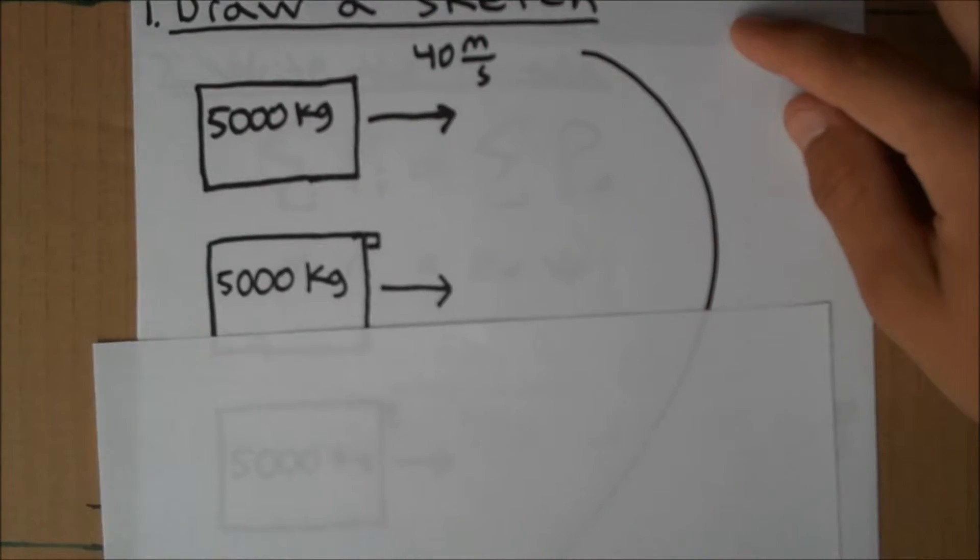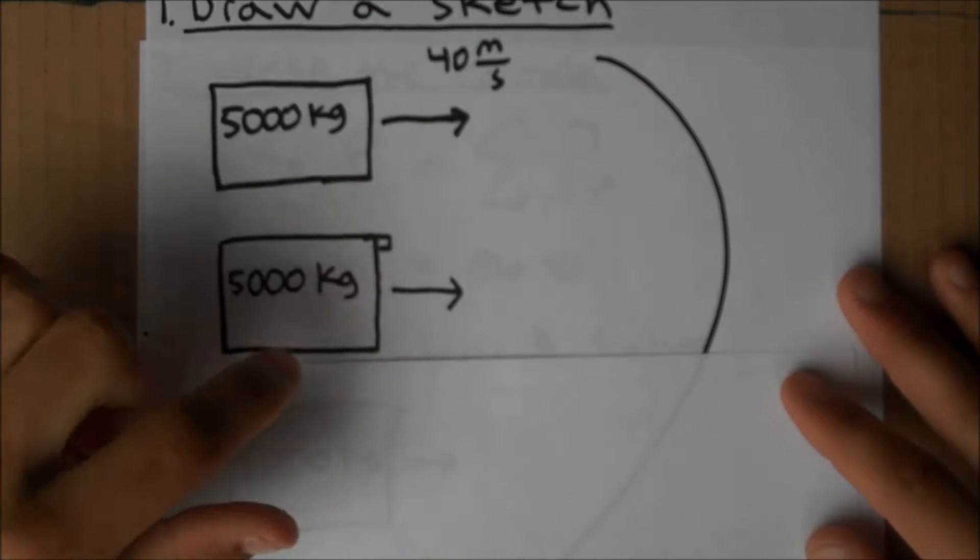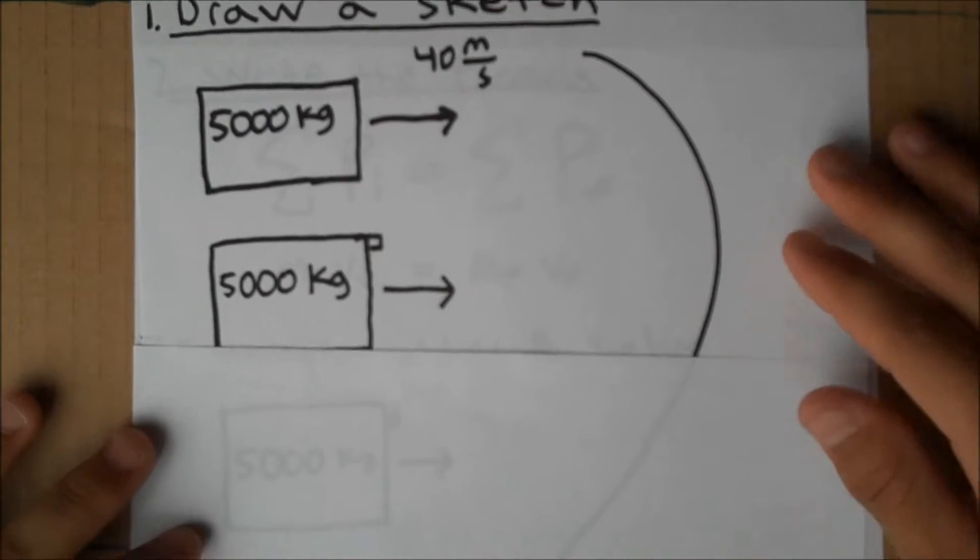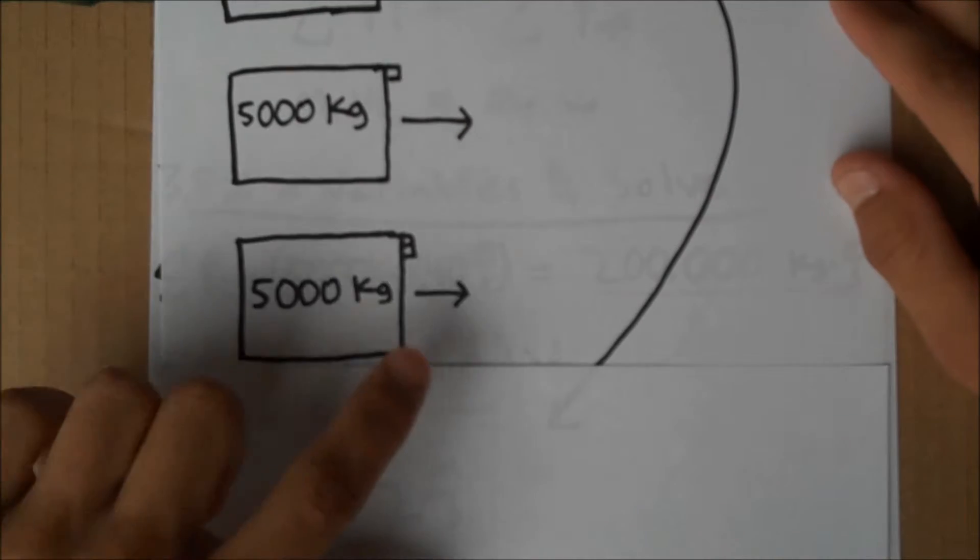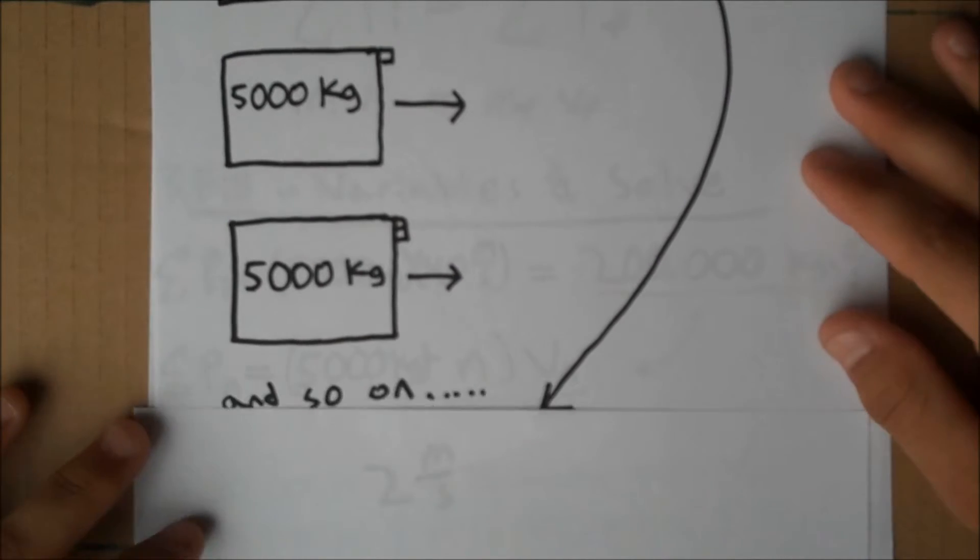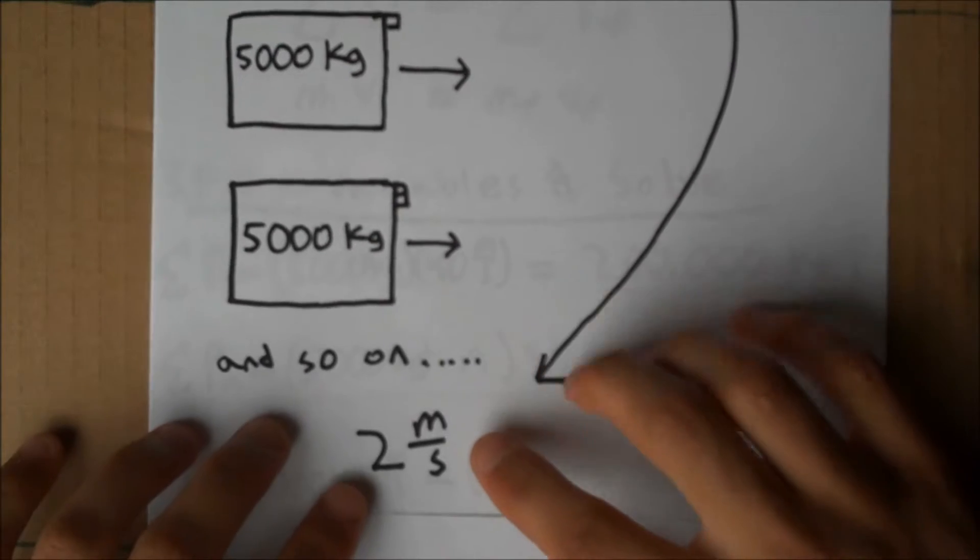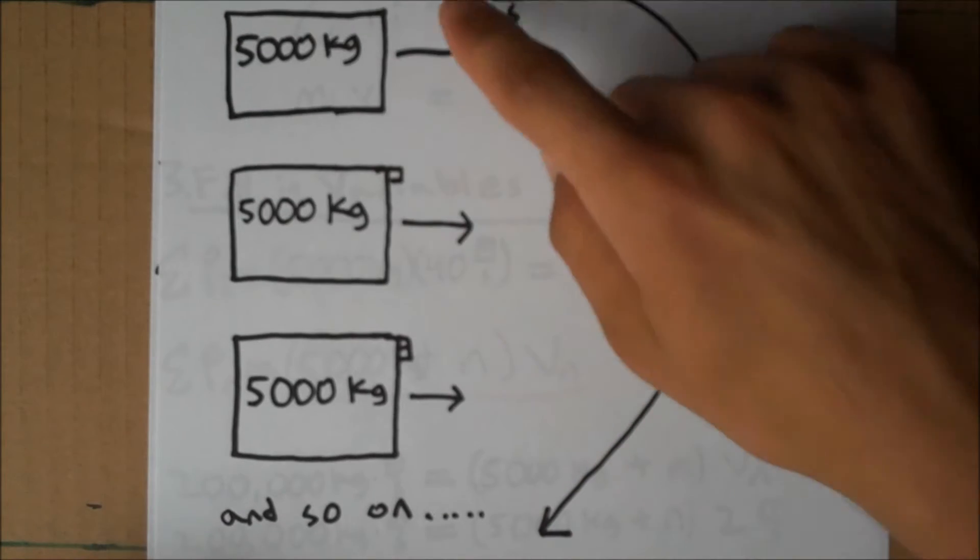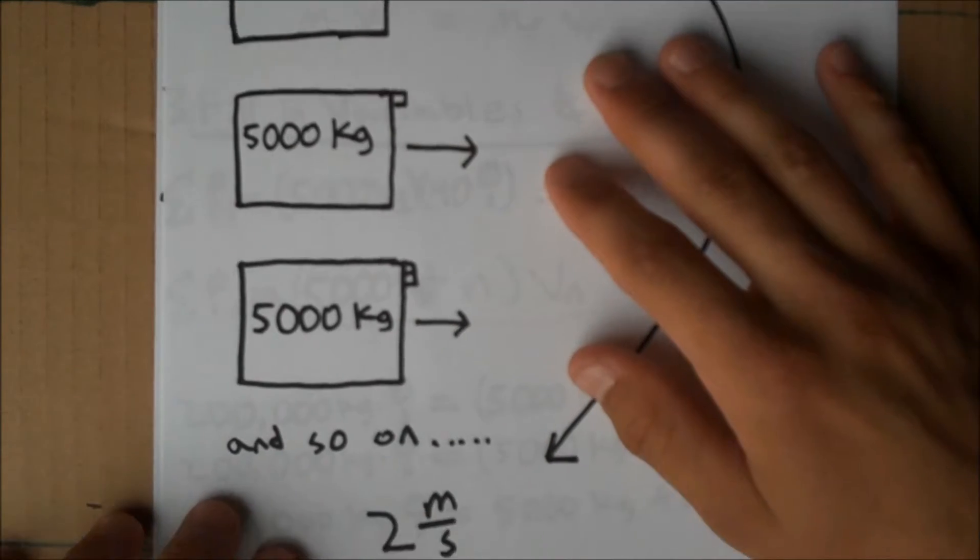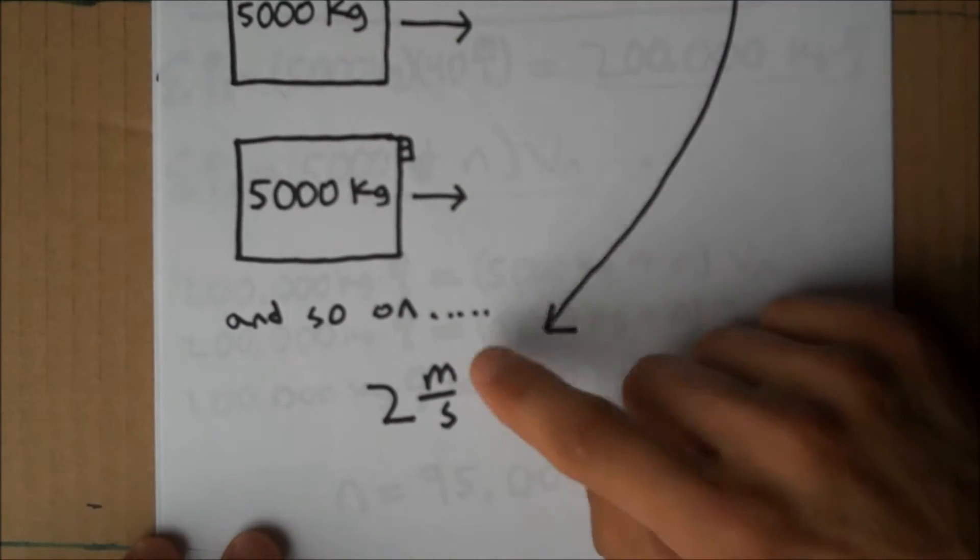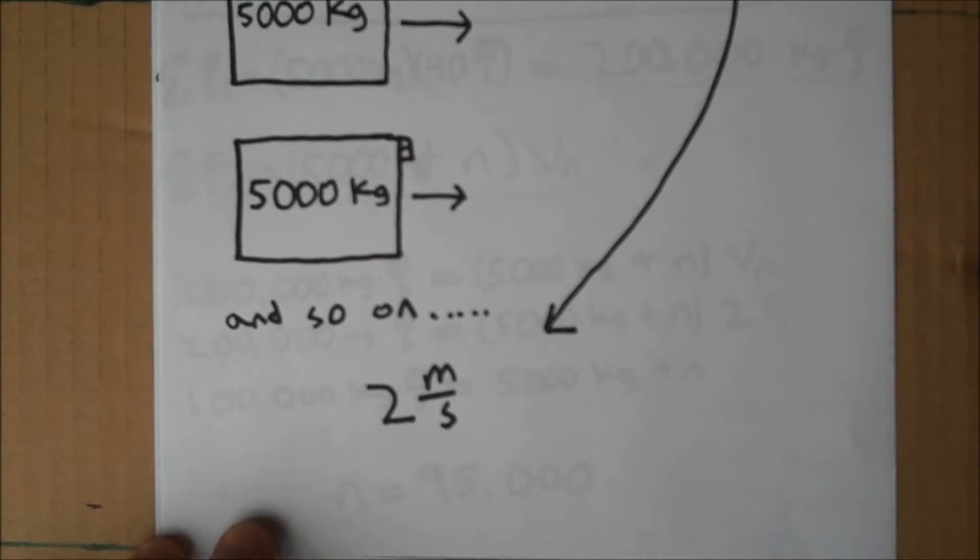Then we can imagine that he runs into the first garden gnome, now moving a little bit slower, runs into the second garden gnome, moving a little bit slower, and so on. Every time he'll be moving a little bit slower and we want to know how many of these collisions it takes to take us all the way down to 2 meters per second because at that point he can pull the emergency parking brake.